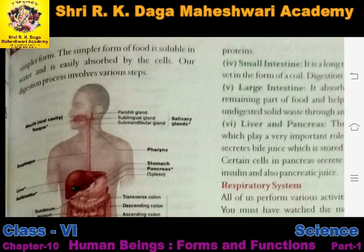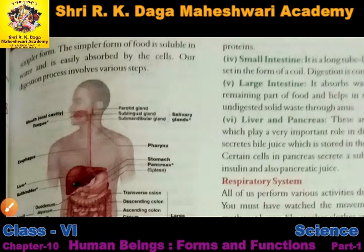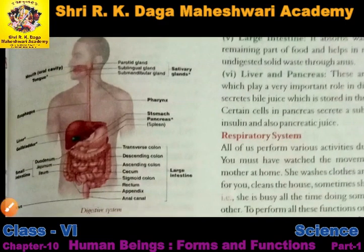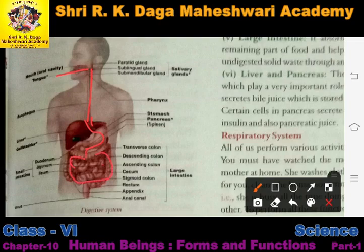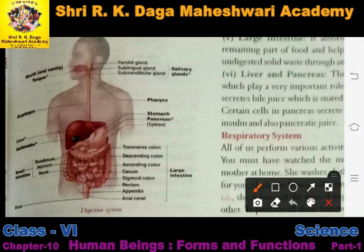There are many different steps in our digestion process, which we are going to study in detail. In the digestive system diagram, food is taken in from the mouth. Through the food pipe, the food passes through the liver and goes to the stomach. From the stomach it is processed in the small intestine and large intestine, and the waste material exits the body through the anus.